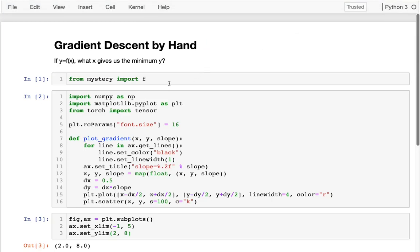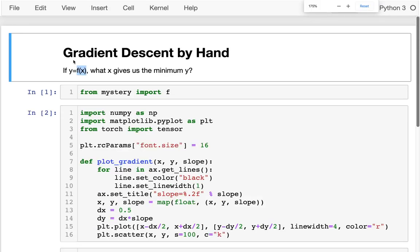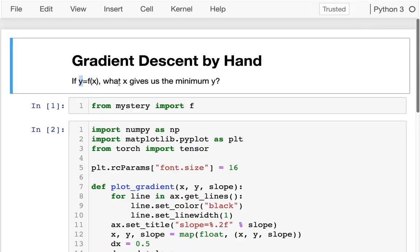Hello, in this video I'm going to be doing some gradient descent by hand. In particular we have a simple function f, and f takes a parameter x and returns a y value for us.